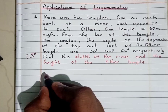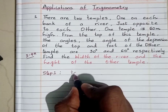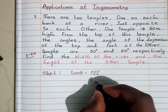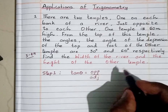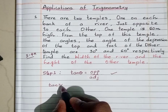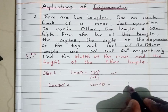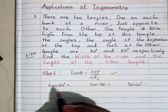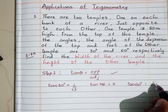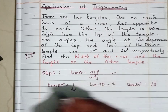When solving Applications of Trigonometry questions, always the first step is to write the most commonly used trigonometric ratio, tan theta. Tan theta equals opposite side divided by adjacent side, that is opposite to angle theta divided by adjacent to angle theta. In most cases, we use three standard angles: tan 30 degree equals 1 by root 3, tan 45 degree equals 1, and tan 60 degree equals root 3. For all questions, try to write this as the first step — at least you will get one mark.